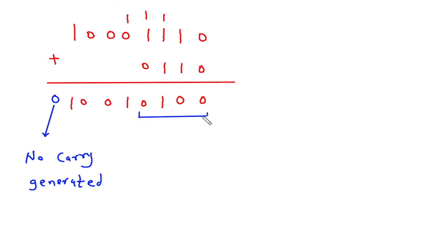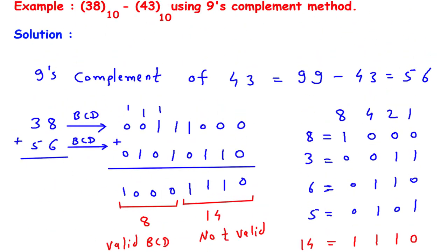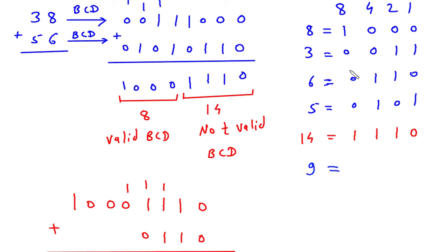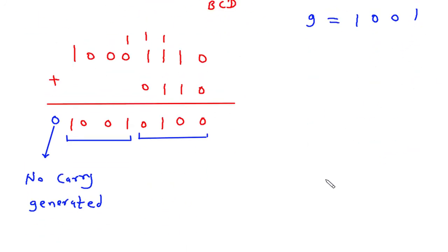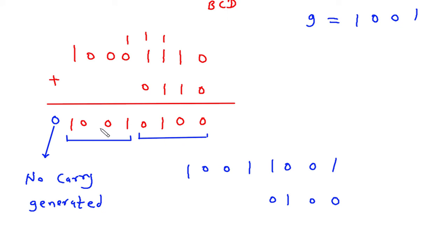We have to find the 9's complement of the result. First, make the grouping of 4. Then we subtract the result from 9. 9 in BCD is written as 1001. So for each group, we write 1001 and subtract the result bits from it.